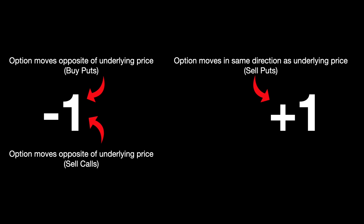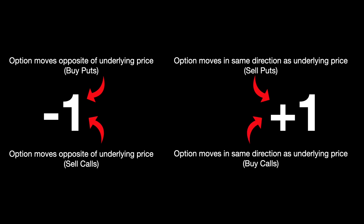If you buy calls, they have a positive Delta, and if you buy puts, they have a negative Delta. It makes sense, right? If you buy a call, you want the underlying to go up in value, and if you buy a put, you want the underlying to go down in value. And if you're selling options, it's just the opposite — if you sell calls, they have a negative Delta, and if you sell puts, they have a positive Delta.